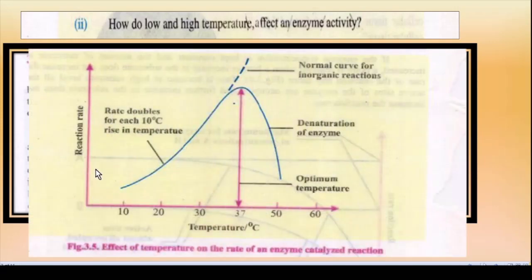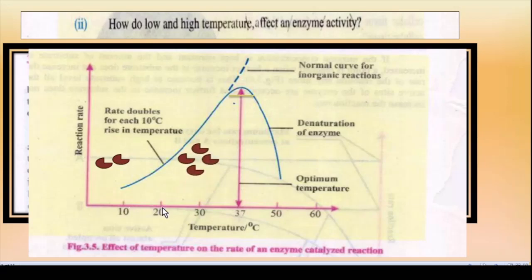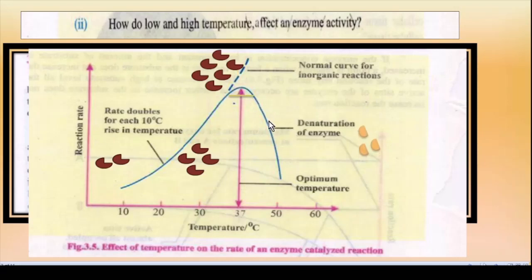Graphically: y-axis pe rate of reaction, x-axis pe temperature. Har 10 degree rise of temperature pe rate of reaction double hota hai — for example, reaction rate 2 se 20 degree pe double ho jaata hai. Yeh optimum temperature tak badhta rehta hai. Optimum temperature ke baad denaturation shuru ho jaati hai, yaani enzyme ka structure tabah ho jaata hai aur enzyme kisi bhi reaction ki speed nahi badha sakta.